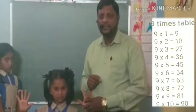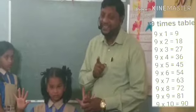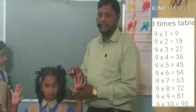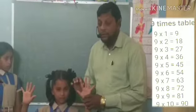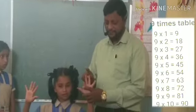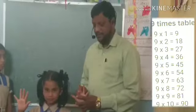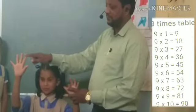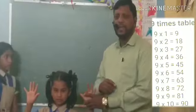Is it not an interesting activity? What I need is your attention. Now for 9 times 4: close the fourth finger. After the closing finger: 1, 2, 3. Before the closing finger: 1, 2, 3, 4, 5, 6. So 9 times 4 is 36.